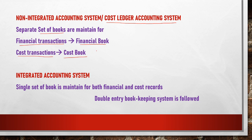Now the question is: if the company is the same and transactions are the same, then why is there a need to record transactions in two different books? Suppose a company recruits three employees — Ram, Mohan, and Shyam — in separate departments. Ram is recruited in the production department, Mohan in the admin department, and Shyam in the selling and distribution department.